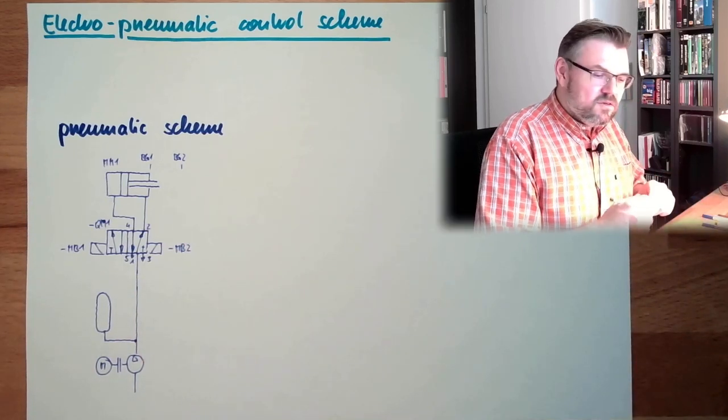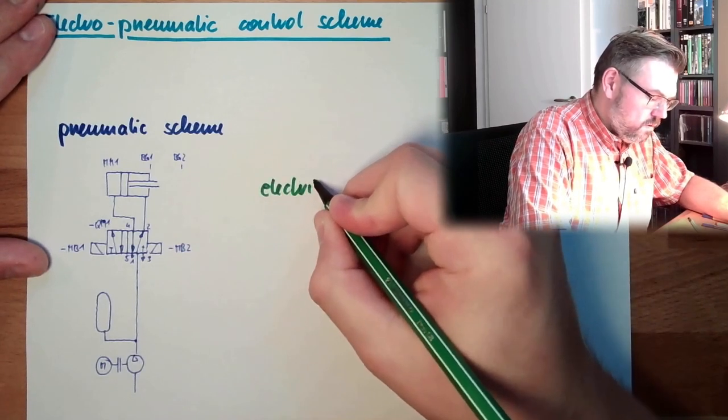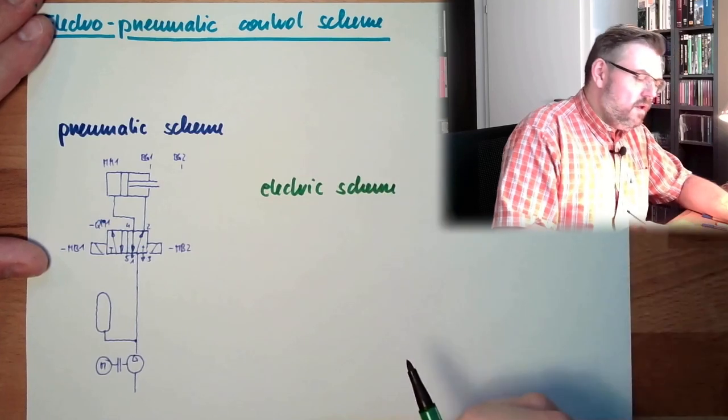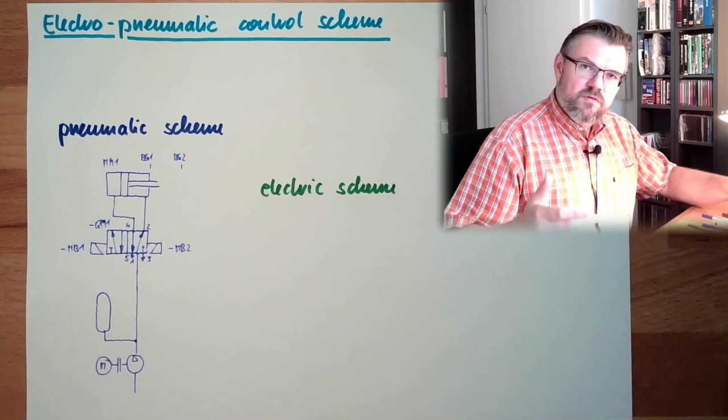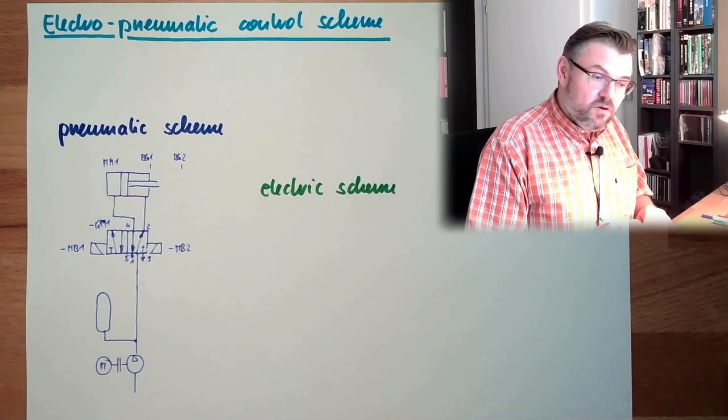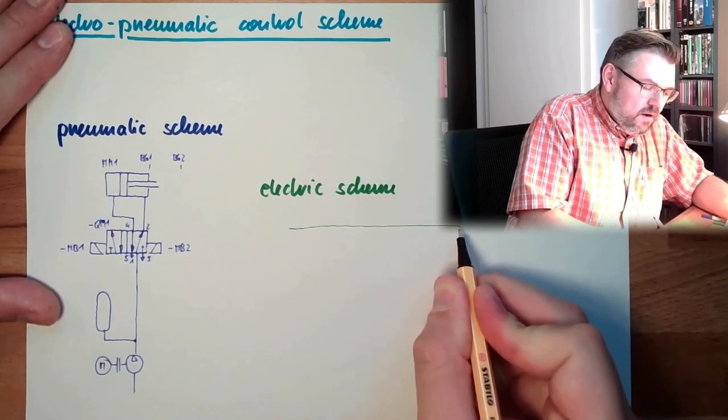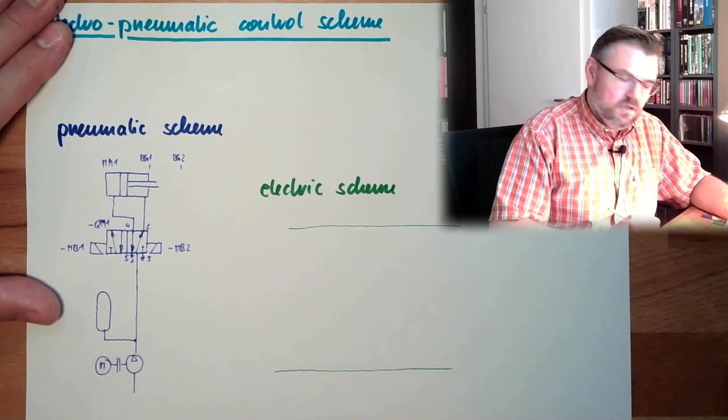Basically it looks like this. And this is completed by the electric scheme. There we said, electric scheme consists of several different plans. And where the logic is inside, this is called the circuit diagram.